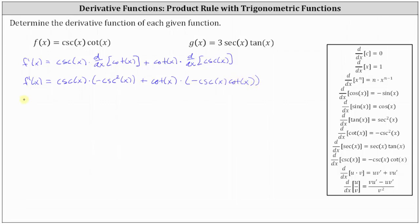Now let's simplify. f prime of x is equal to negative cosecant cubed x. And then we have plus negative cosecant x times cotangent squared x — let's write that as minus cosecant x times cotangent squared x. And if we wanted to, we could factor this because we have a common factor of cosecant x.